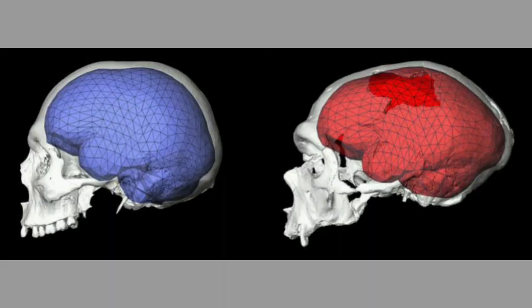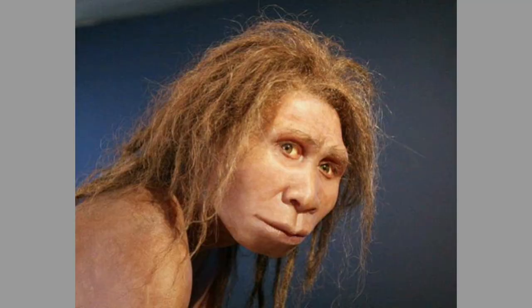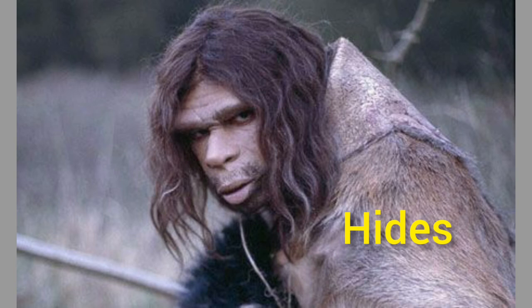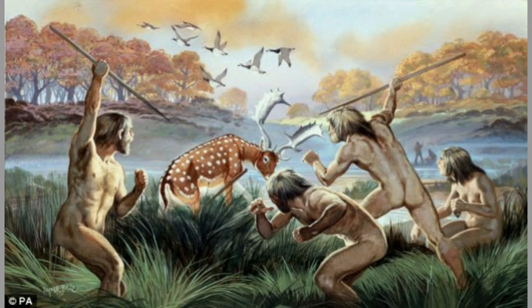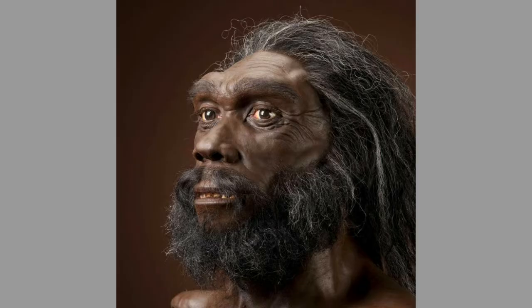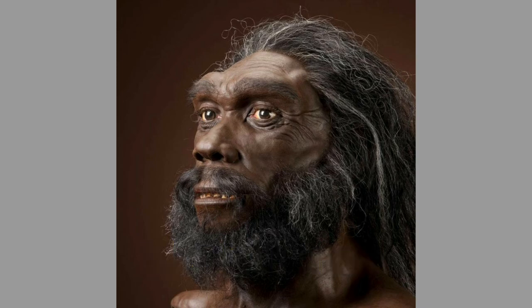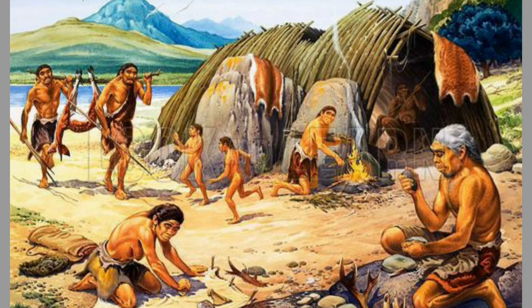Next comes Homo sapiens Neanderthal. They had a brain capacity of 1400 cc. They were a type of primitive man who used hides to protect their body, and very importantly, they buried the dead bodies. Last comes modern man — Homo sapiens sapiens — who created human settlement and civilization.